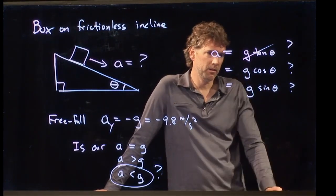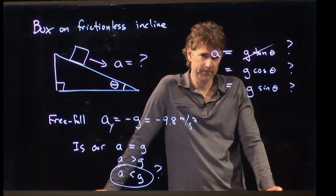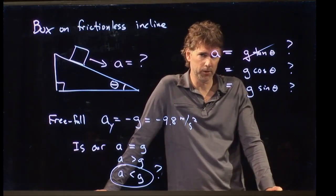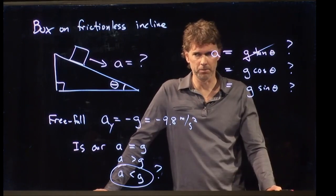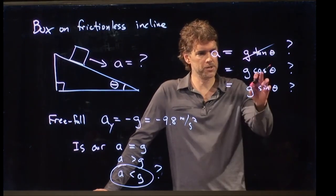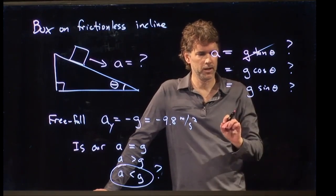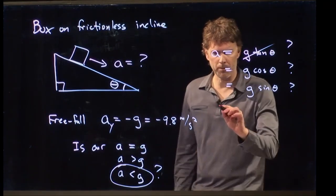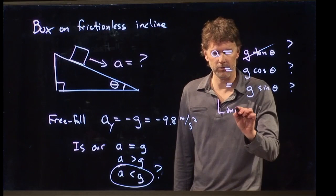g cosine theta, is that a possibility? Yeah. Cosine theta is always less than 1. Sine theta is also a possibility because sine theta is always less than 1. So now we're down to these two choices. And this is the way you remember how to do this.